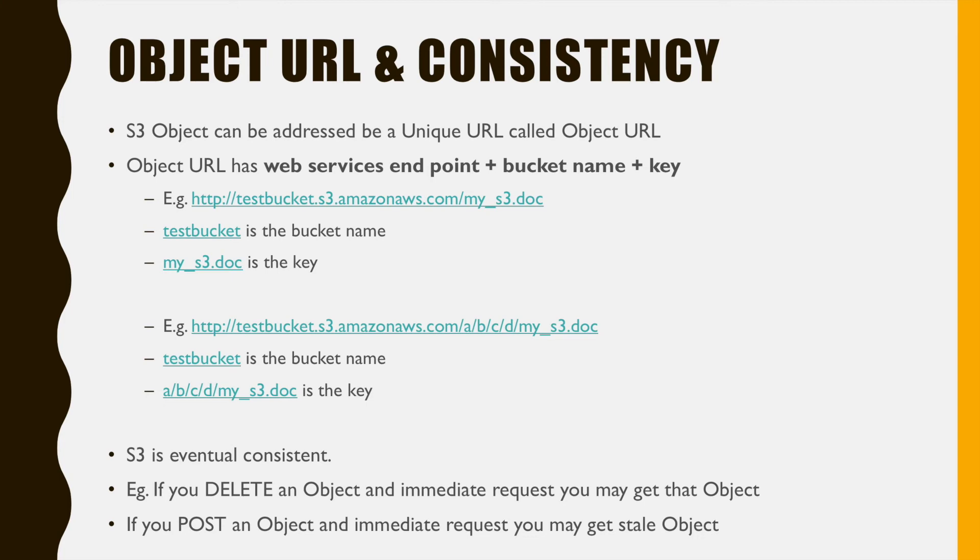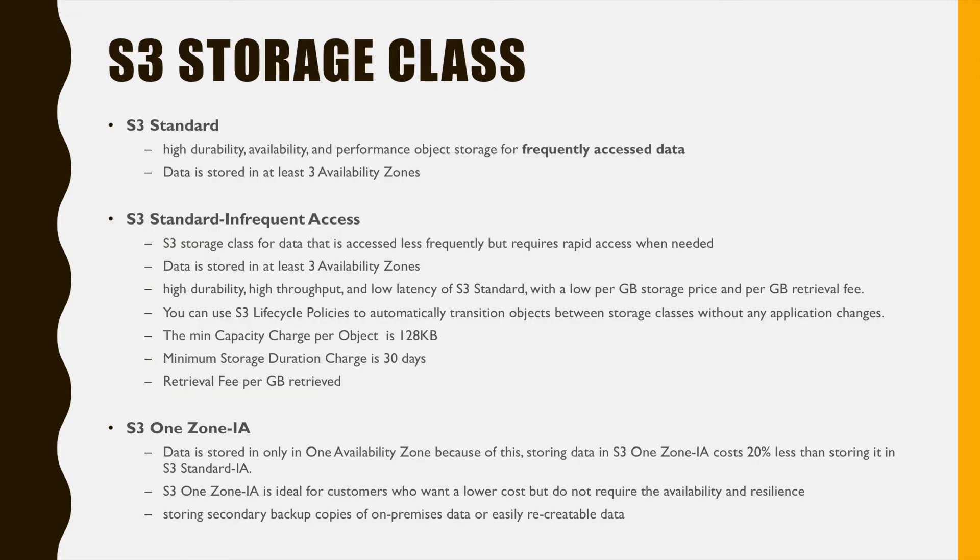S3 is eventually consistent, which means if you delete an object and immediately fire a GET, the request may still return the object for some time. Another example: if you update an object and immediately GET it, it may return the old object. It is important to understand eventual consistency.